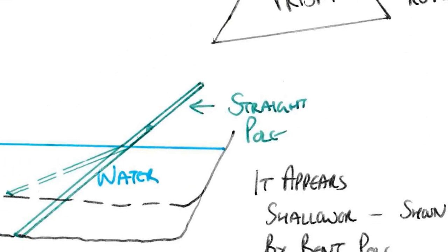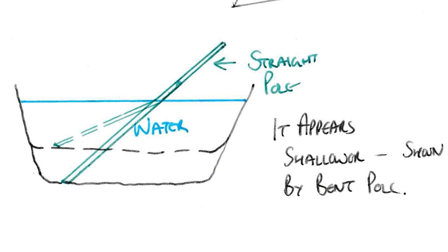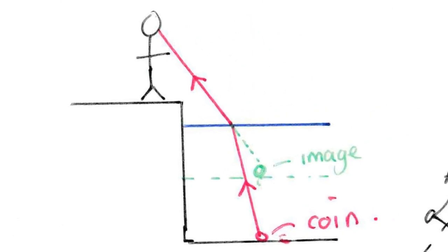You can see examples of this if you try this yourself. If you get hold of a broom or a ruler and stick it into water and you look down along the length of the pole, you'll see that the pole appears to bend. In fact, the bath or whatever you put it in actually appears shallower than it really is.